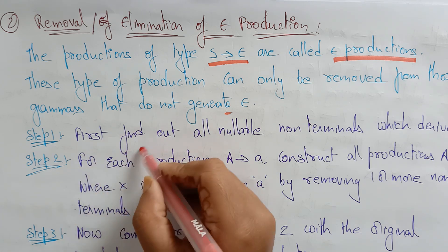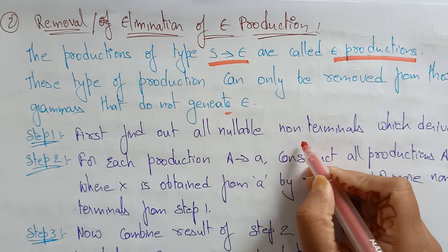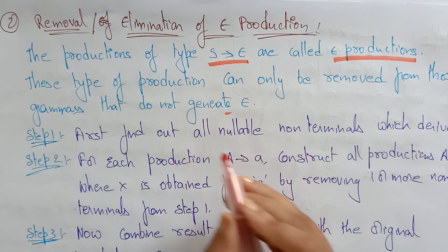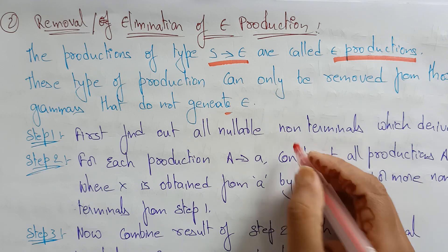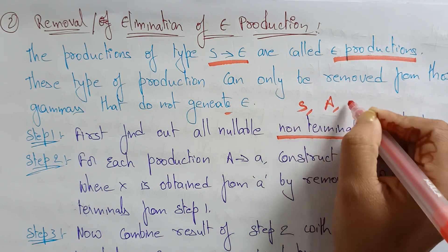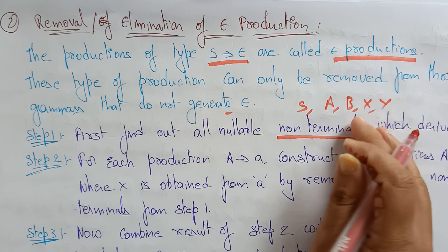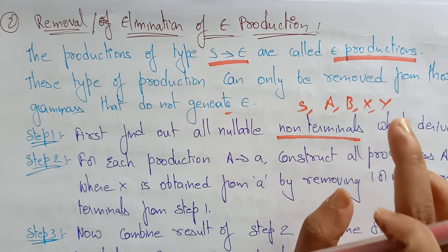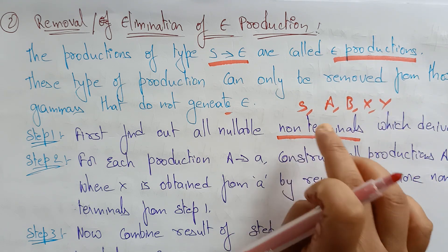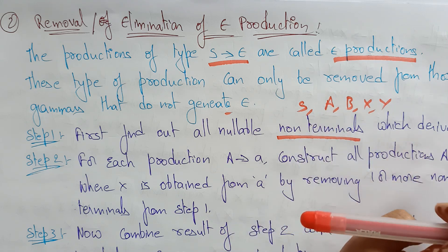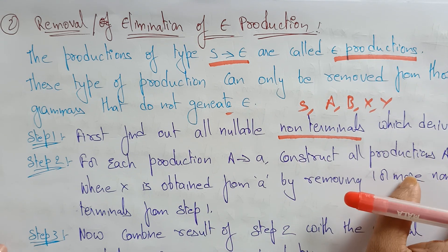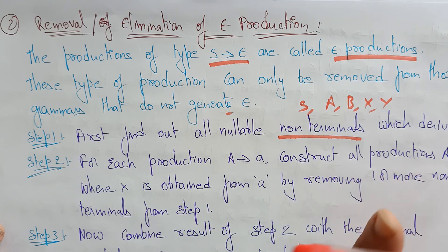To eliminate epsilon productions, you have to follow some rules. First, find out all nullable non-terminals which derive epsilon. Whatever non-terminals are present — including the start symbol — you have to find out whether these non-terminals are deriving epsilon or not.